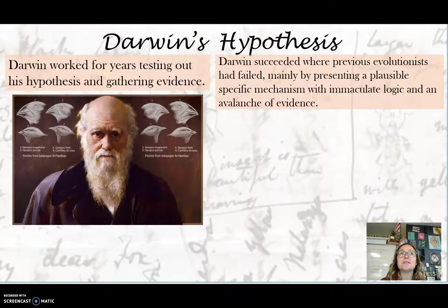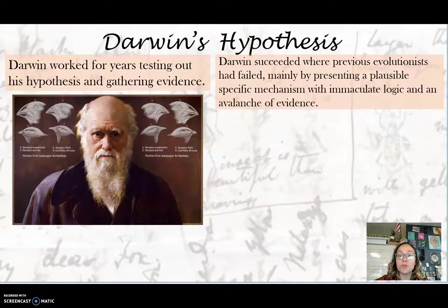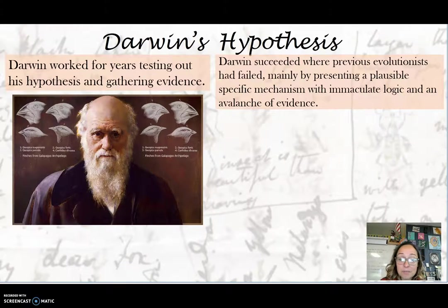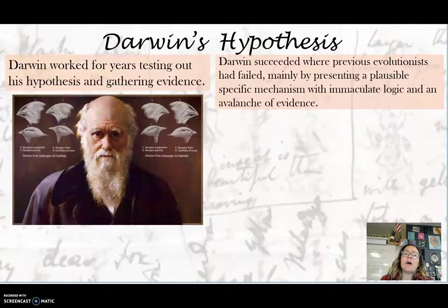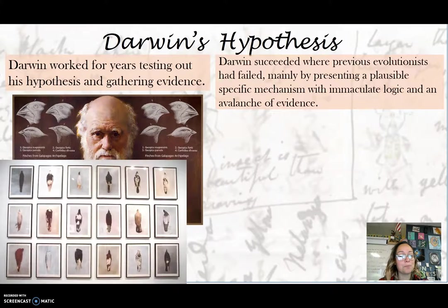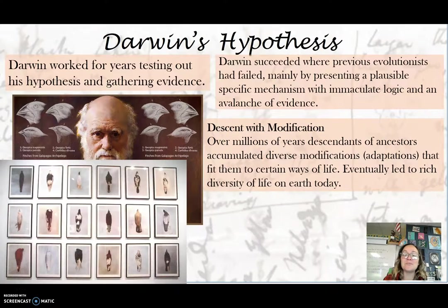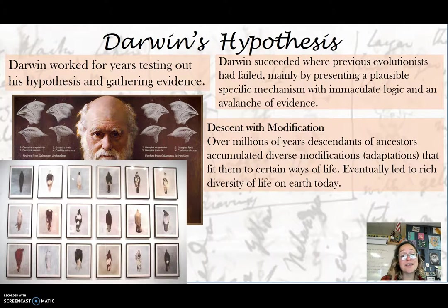The time period of the 1800s strongly held that the Earth was 6,000 years old. For Darwin, realizing that natural selection is a very slow process that could create new species and all the diversity of life, he was very hesitant to come out and say this because it would go against the religious beliefs of the time — so much so that it made him sick, and he had lots of ailments throughout his life. For about 20 years he kept his mouth shut. He actually had his hypothesis written out and in a safe, telling his wife, 'If I die, make sure you publish this.' He did breeding experiments with pigeons, and basically presented descent with modification — that over millions of years, descendants of ancestors accumulated diverse modifications or adaptations that fit them to a certain way of life, eventually leading to the rich diversity of life on Earth today.